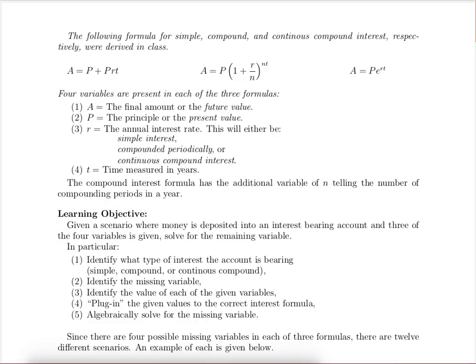This is the third in a series of videos looking at the 12 different scenarios that have problems that arise in this situation. In each case we're going to identify the type of interest that the account is bearing, identify the missing variable, identify the values of each of the given variables, plug that into the correct interest formula, and then algebraically solve for the missing variable.